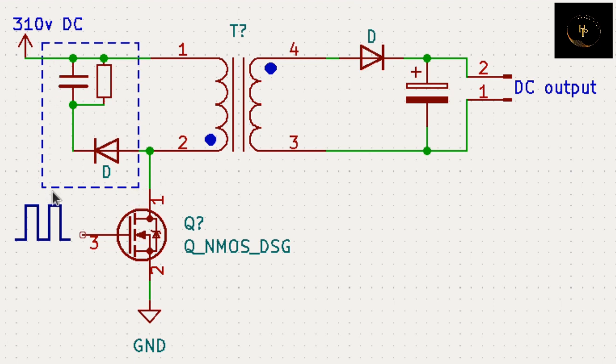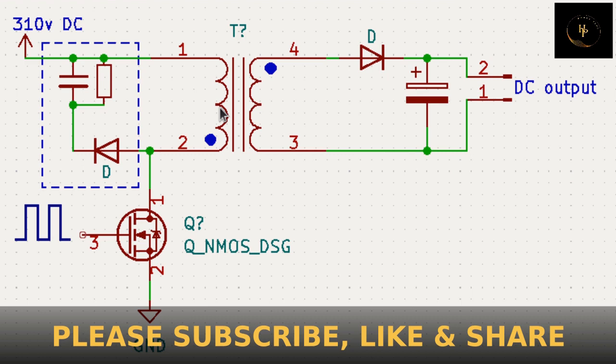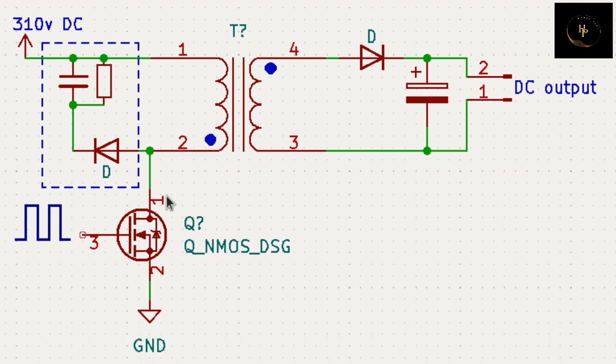This circuit is called a snubber circuit, also called a clamping circuit. There are two types of clamping circuits: one is active, another is passive. This clamping is a passive clamping circuit.